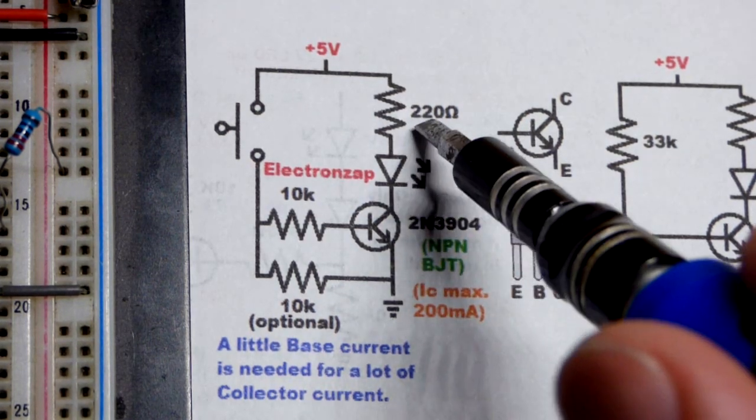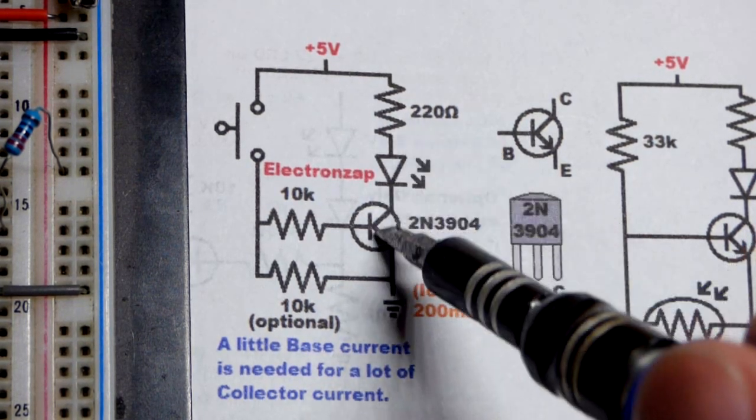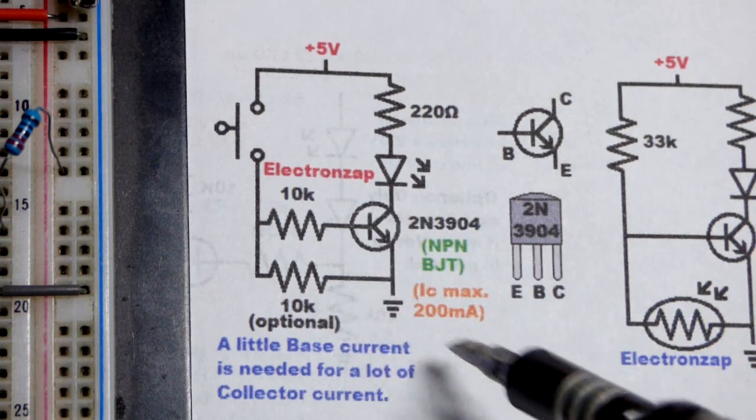So ultimately, the brightness of the LED was set by the resistor value there, 220 ohms, not the transistor.